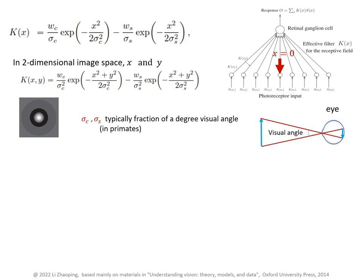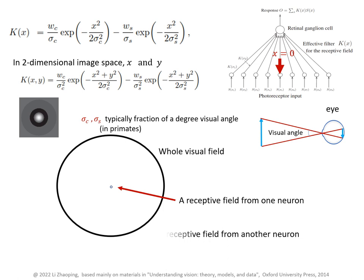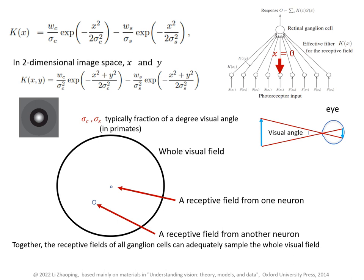Typically, a receptive field is very small. For a retinal ganglion cell in monkeys, it's only a fraction of a degree in visual angle. Different neurons have different center regions of their receptive fields so that the whole population of the retinal ganglion cells can collectively sample the whole visual field adequately. Receptive fields are smaller in the central visual field than in the peripheral visual field. So neurons are more densely packed at fovea, which is in the central part of the retina.